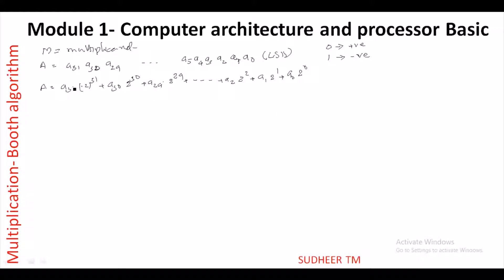This is the way of representing A in its two's complement form in computer architecture. If a31 is 0, the number is positive. If a31 is 1, then the term 1 × (−2^31) makes the overall sum negative, since −2^31 dominates. The range of numbers in two's complement representation is from −2^31 to 2^31 − 1. For more detail, refer to literature on two's complement representation.